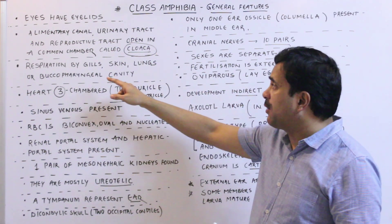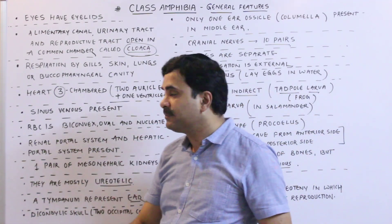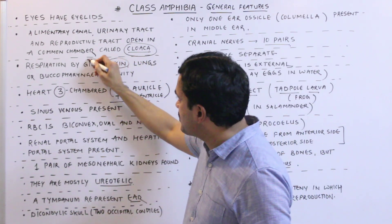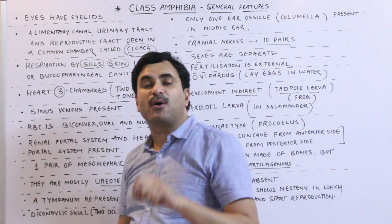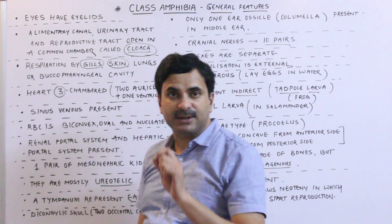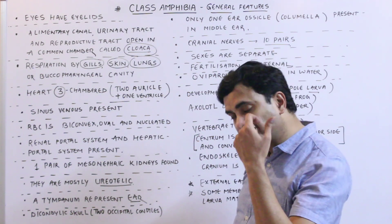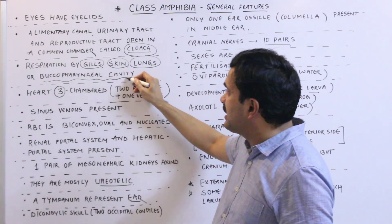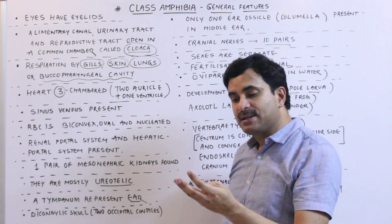Respiration does not occur only through the skin. It may also occur with the help of gills — for example, the larva of the frog, known as the tadpole larva, respires with gills when in water. Lungs can also participate in respiration in the mature frog, and the bucco-pharyngeal cavity also helps in respiration. So respiration can be performed by gills, skin, lungs, and bucco-pharyngeal cavity.